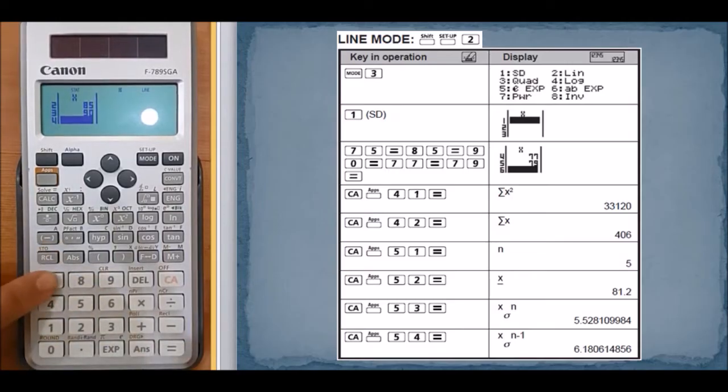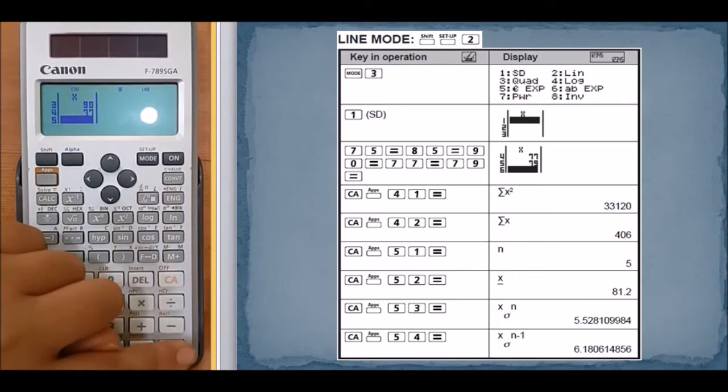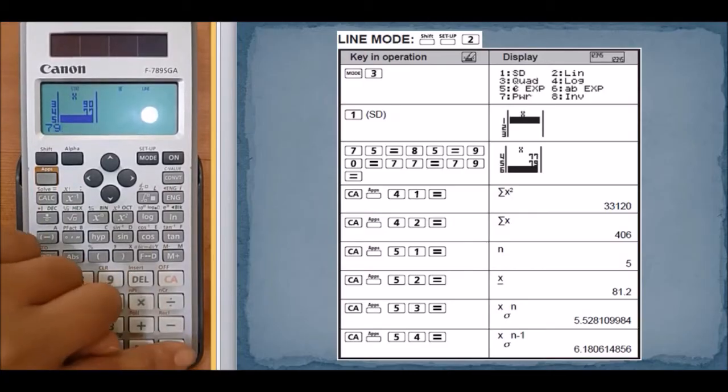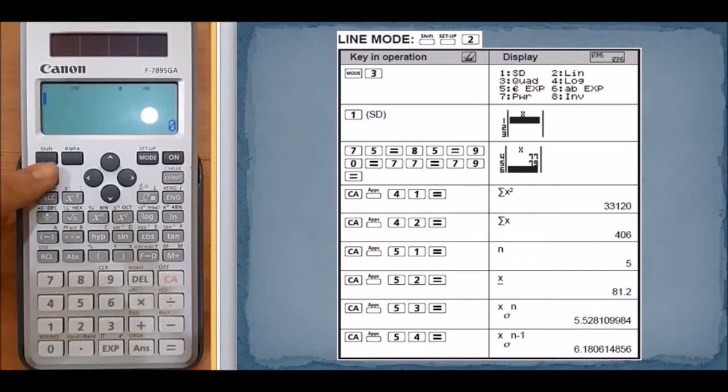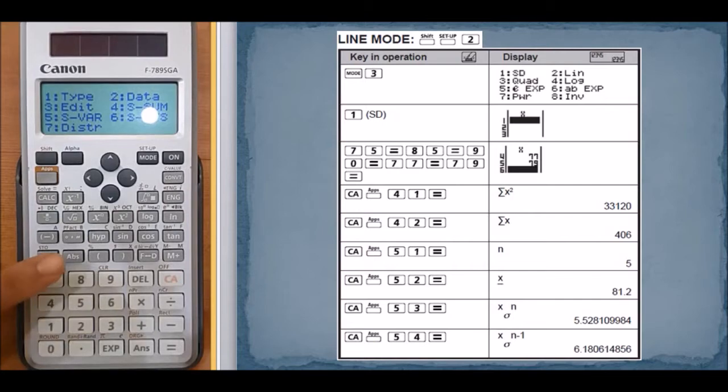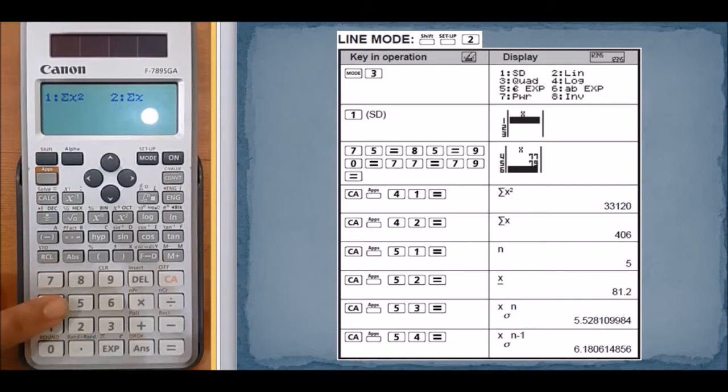77 equals, 79 equals. Press CA, press apps. If you press 4, we want to find the sum of the numbers squared, then you will get 33,120.